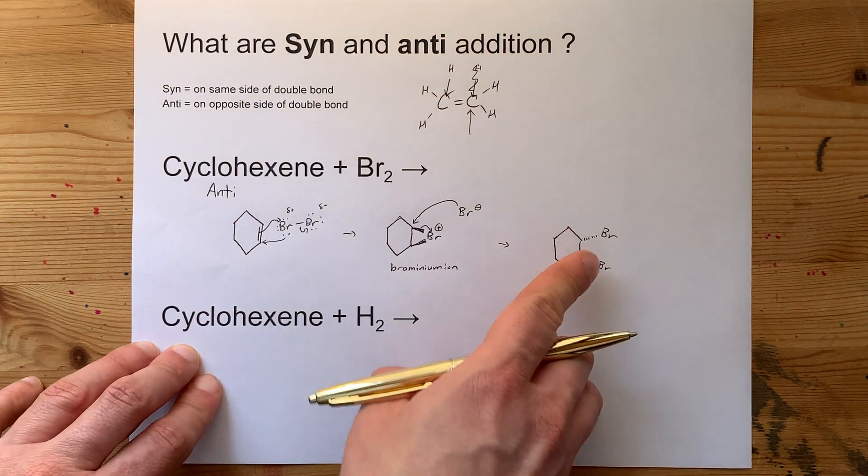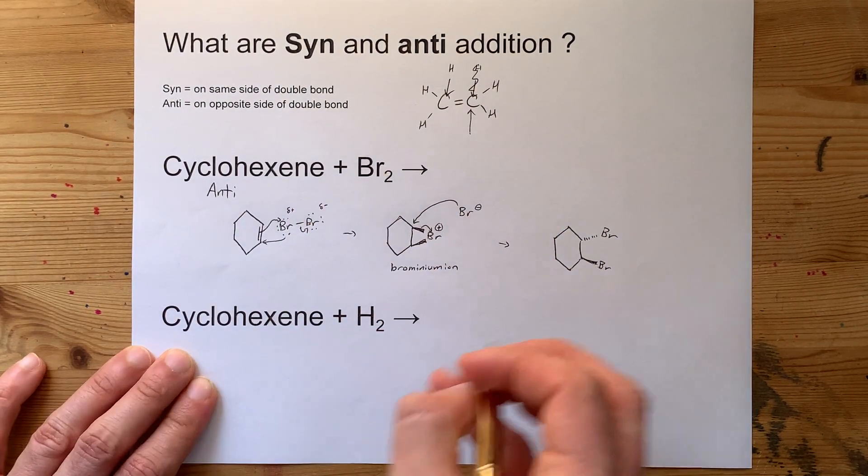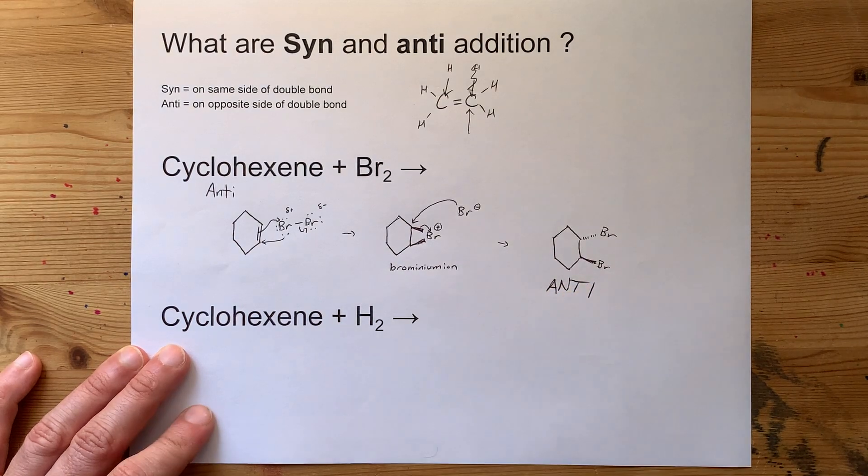Opposite sides of the double bond, one up, one down in the product. That is an anti-addition.